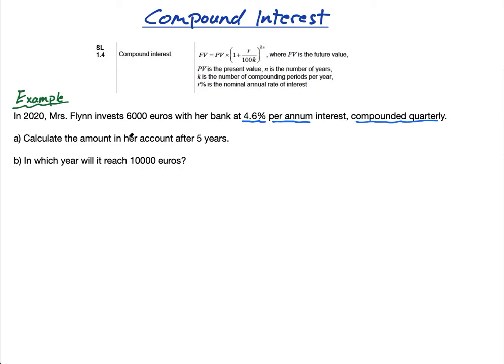Part A: Calculate the amount in her account after five years. So she's going to earn some interest here. How do we do it? Well, the future value—this is the formula. FV is future value, PV is present value, n is the number of years, K is the number of compounding periods per year, and r% is the nominal annual rate of interest.